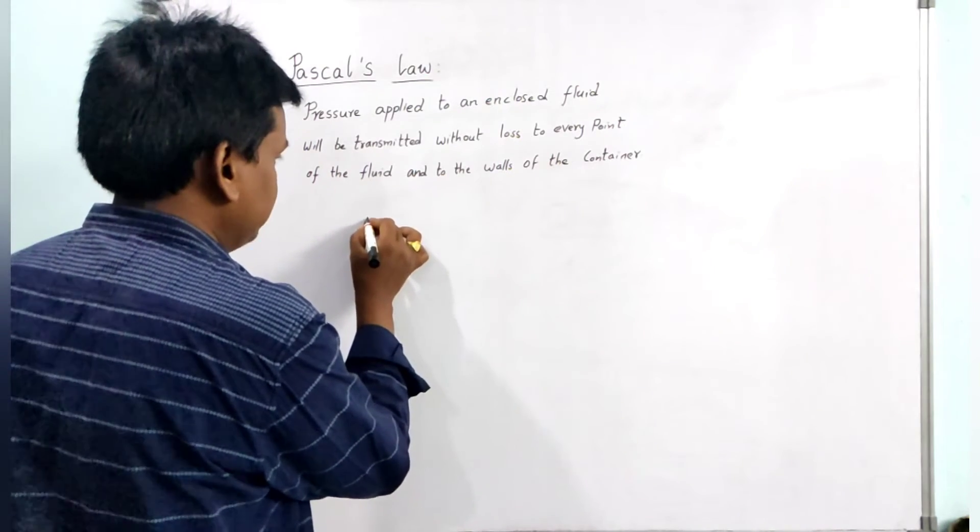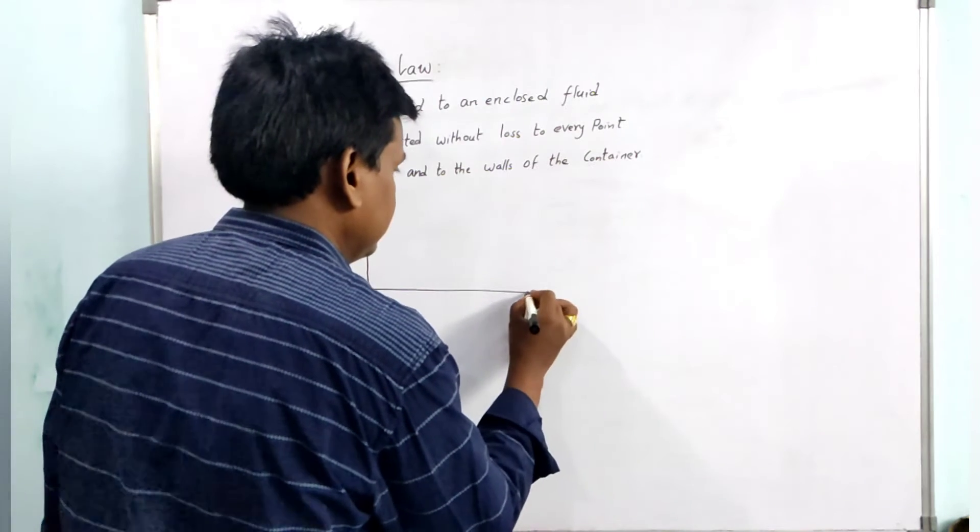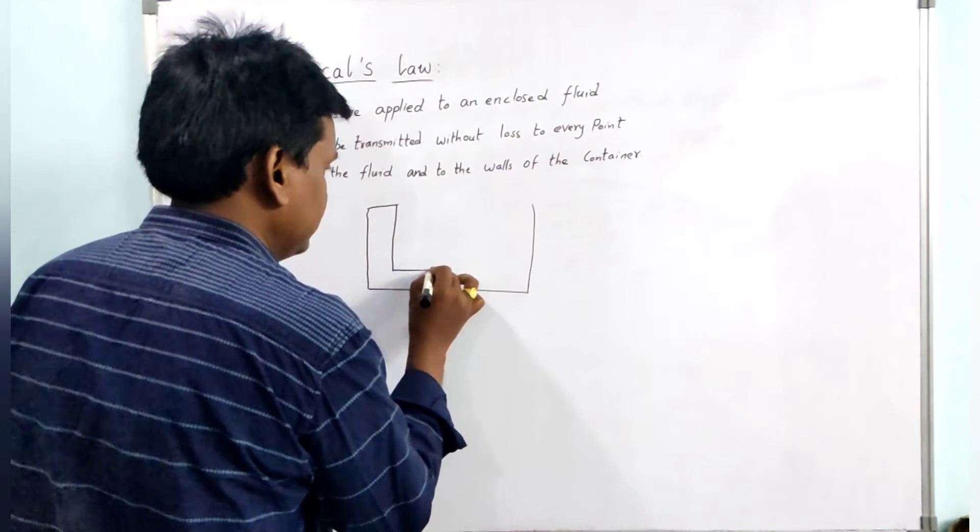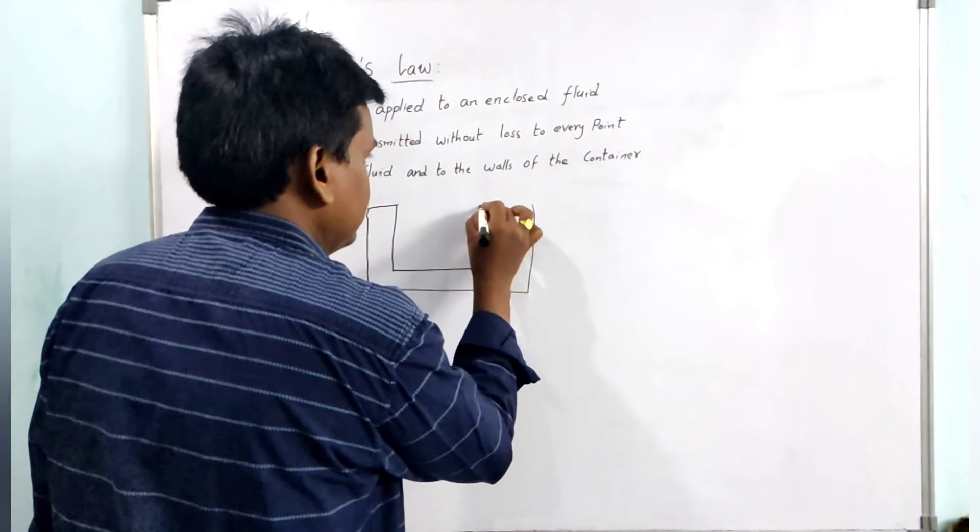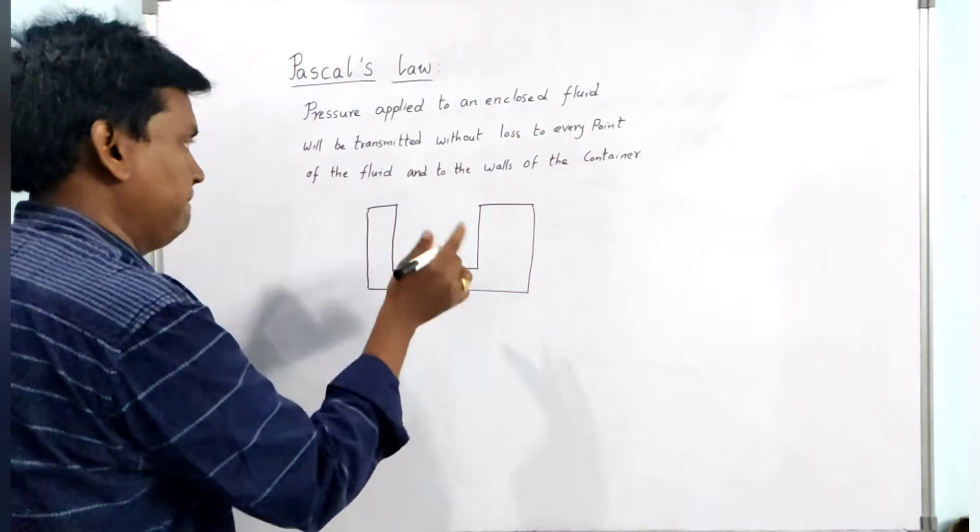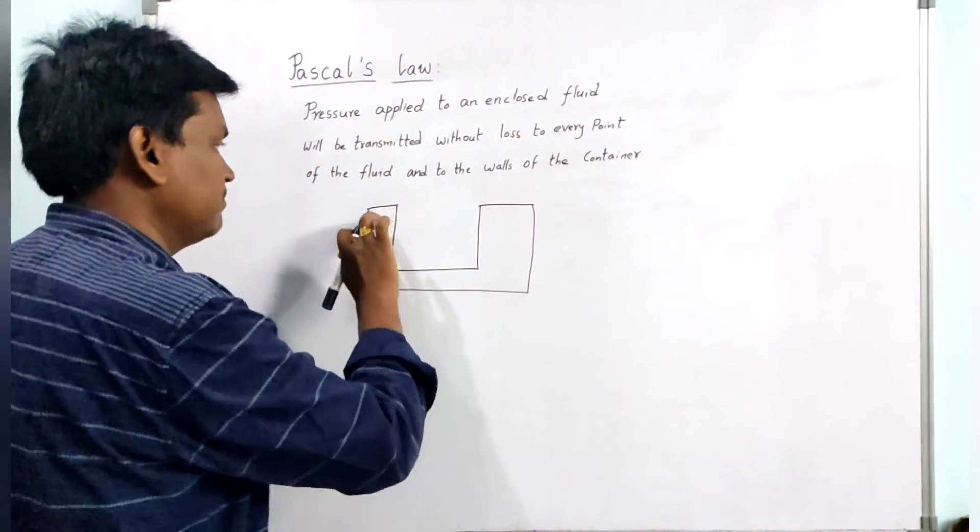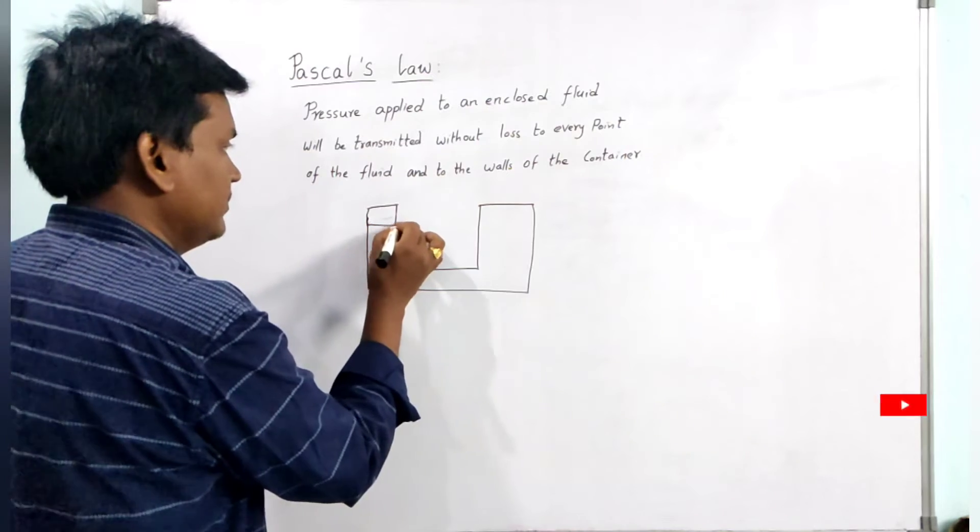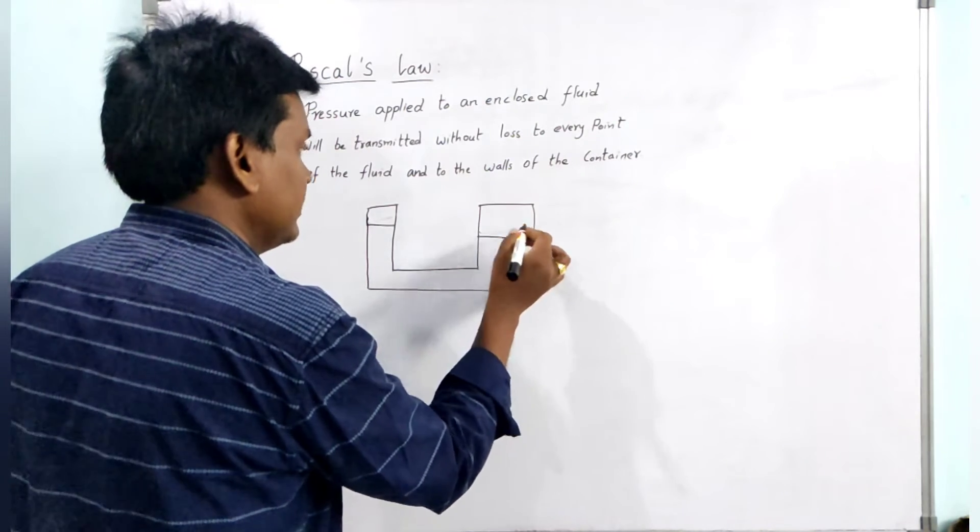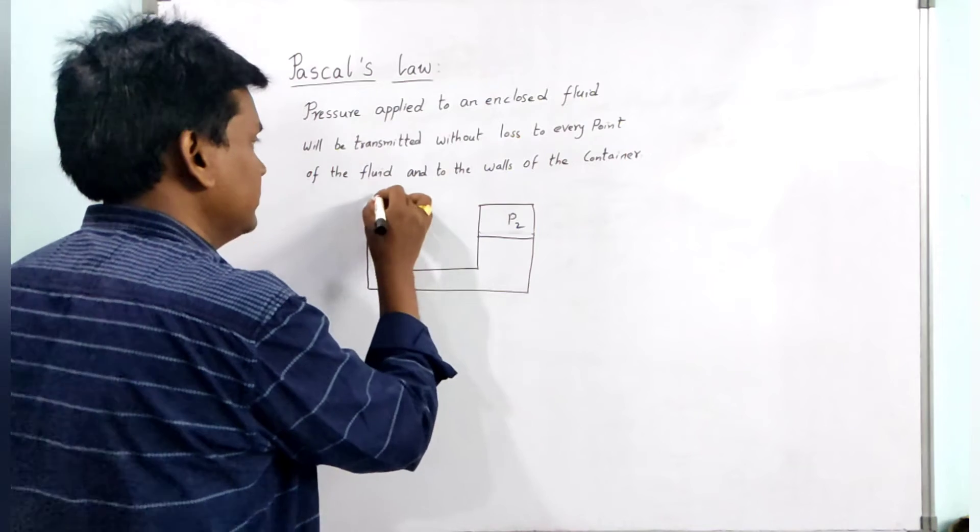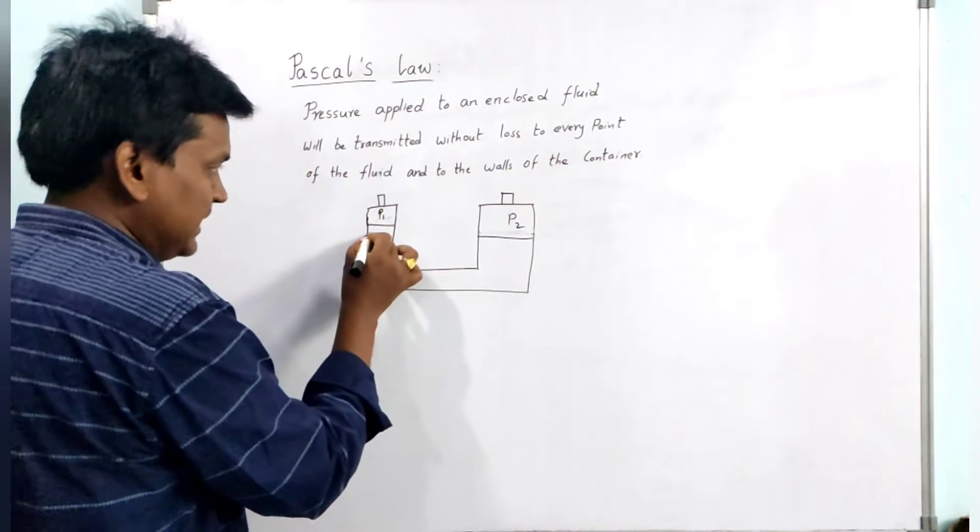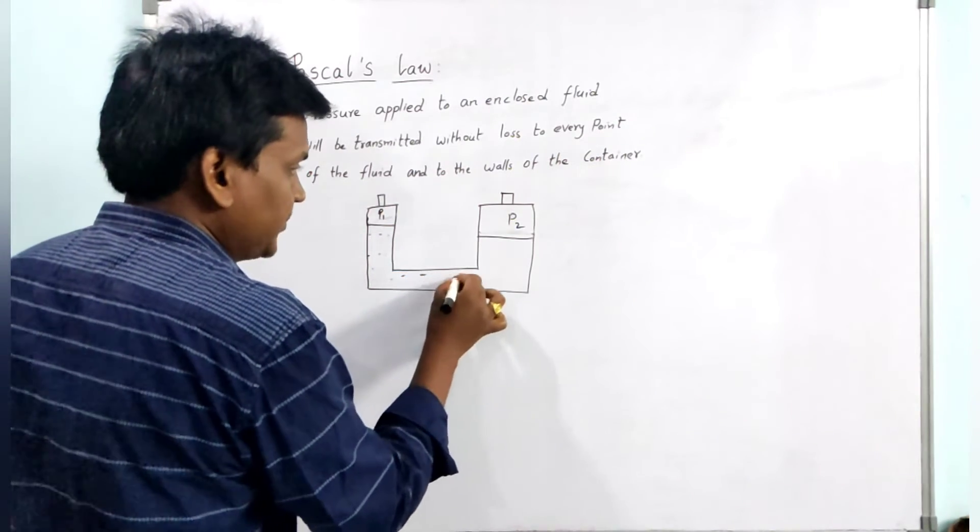If you consider a hydraulic press, one end is a narrow end and another end is a broad end. Here there will be a piston, and here also there will be a piston - piston 1 and piston 2. Inside it, it will contain fluid.